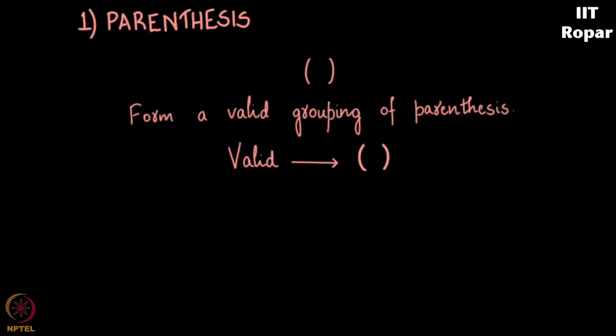This is a valid parenthesis grouping. This is also valid, but this one is not valid because here is an open parenthesis and here is a closed one — so that part is valid — but again we have an open one with no closed parenthesis for it, therefore it is not valid.